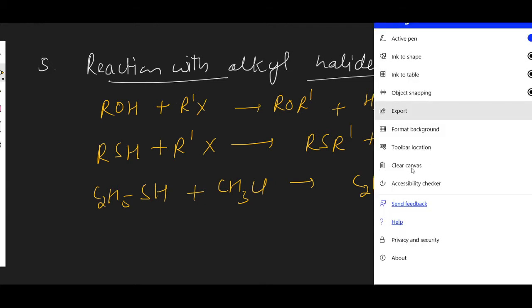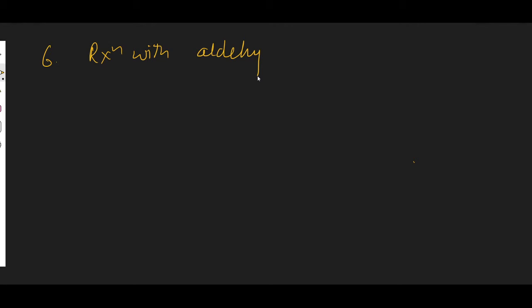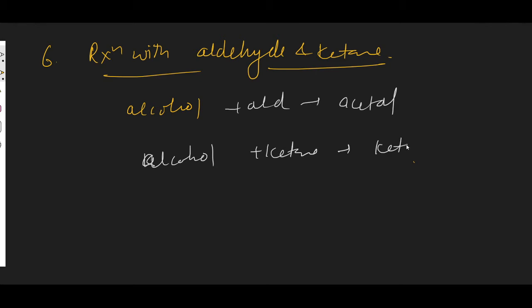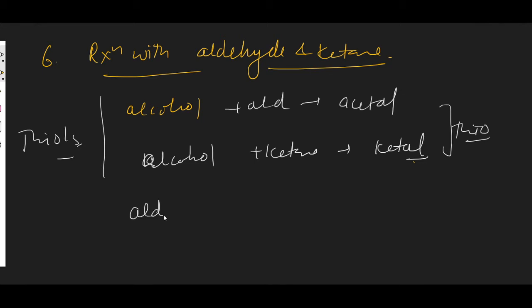The next reaction is number six — reaction with aldehydes and ketones. Just as when we react alcohol with an aldehyde we get an acetal, and with a ketone we get a ketal, when we react thiols instead of alcohols, the formation will be of thioacetal and thioketal. That is the key difference; the rest of the reaction is the same.